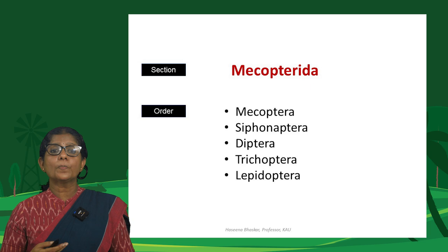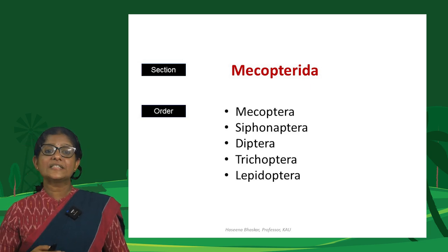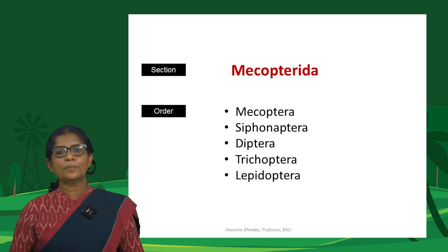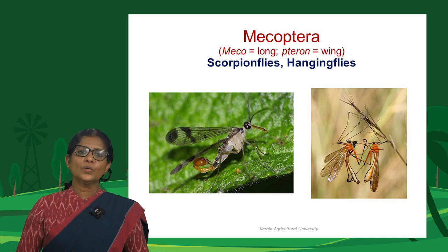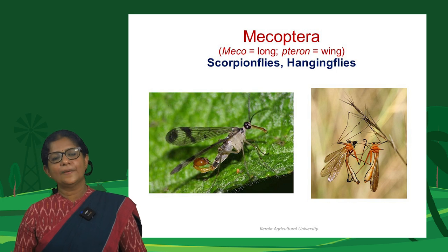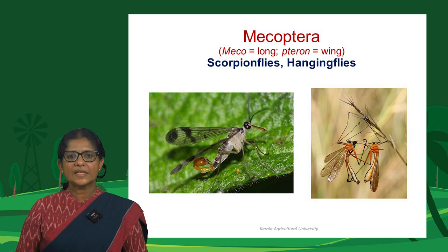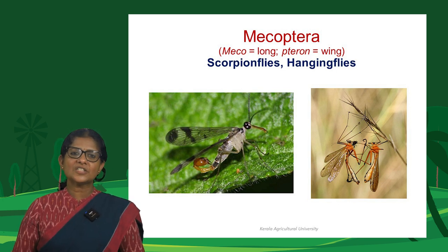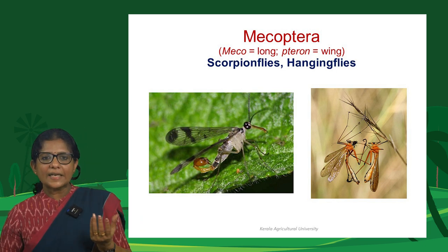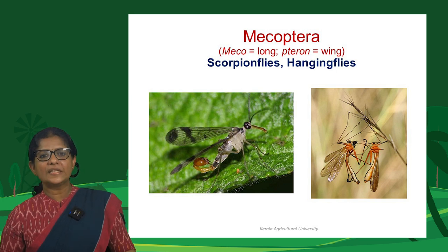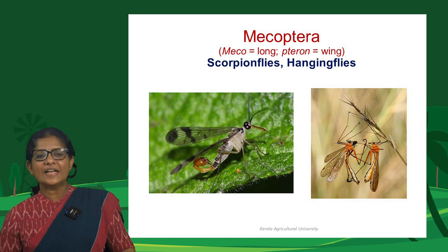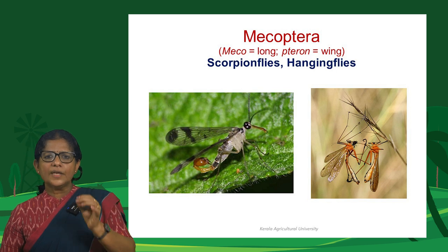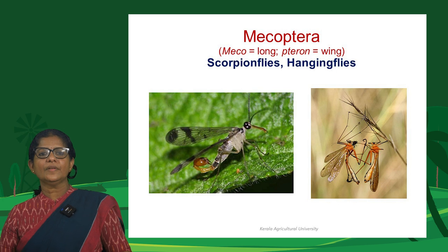Section Mecopterida is a large section with 5 insect orders: Mecoptera, Siphonaptera, Diptera, Trichoptera, and Lepidoptera. Mecoptera are scorpion flies and hanging flies — 'meco' means long and their wings are nearly as long as their abdomen. In some males, the posterior abdominal segments are bulbous and curved upward like scorpion fangs, while hanging flies have long slender legs and hang from branches. Siphonaptera are fleas — 'siphon' refers to sucking mouthparts and 'aptera' means wingless. They are all parasitic apterous insects with laterally flattened bodies and comb-like ctenidia.